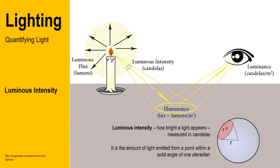The definition of a steradian is best understood by the diagram on the slide. Luminous intensity is the amount of light emitted from a point within a solid angle of one steradian. The unit of measure for luminous intensity is candelas.